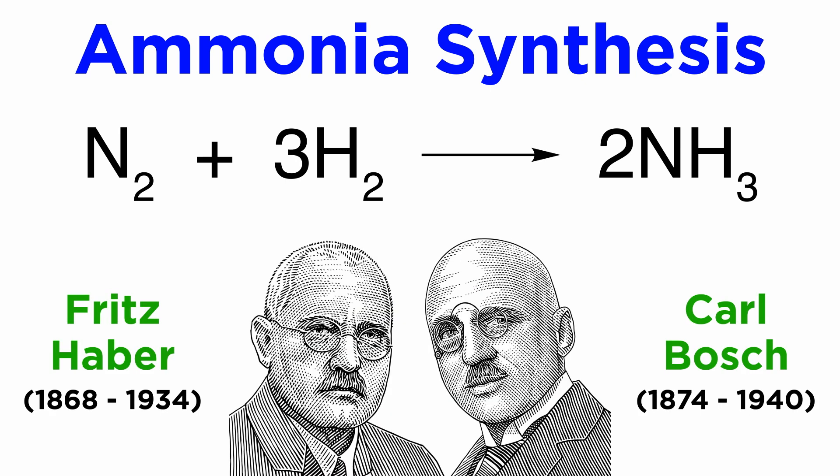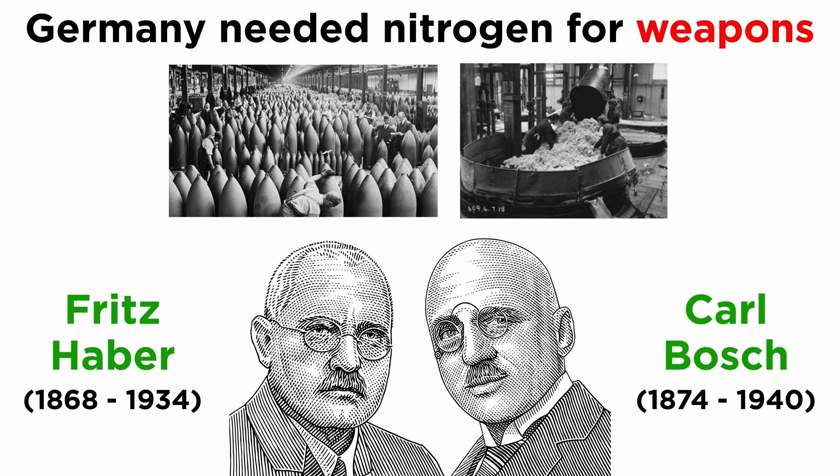The first practical version of this process was invented by German chemists Fritz Haber and Karl Bosch at the beginning of the 20th century. The driving force for this development had to do with the weapons industry, which relied on nitrates. Nitrates were not available to Germany, and therefore Haber and Bosch were tasked with finding a solution to the unavailability of large enough sources of fixed nitrogen.